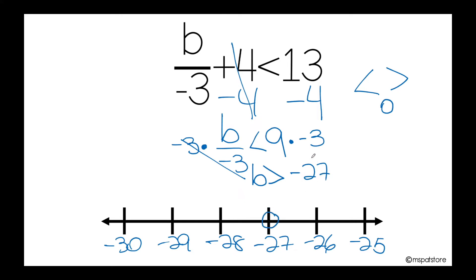Now I need to analyze what the solution is telling me — basically saying that any number could be greater than negative 27. Remember that on the negative side, as they move away from zero, they become smaller and smaller.